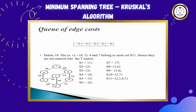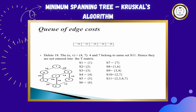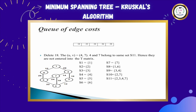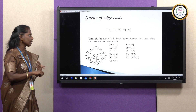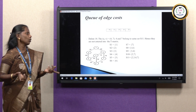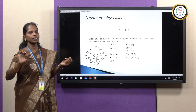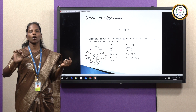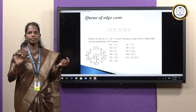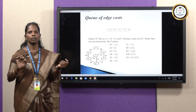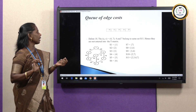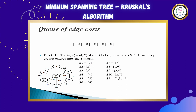Next, take edge cost 18. Find the nodes associated with 18 — they are 4 and 7. Check if 4 and 7 are in the same set or different sets. If you check your sets, 4 and 7 are both in set S11. If they are present in the same set, we should not include them in the T matrix because they may form a cycle. So we do not enter 4 and 7 in the T matrix.